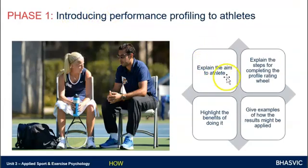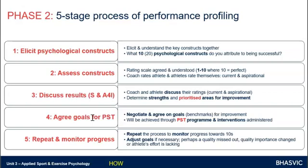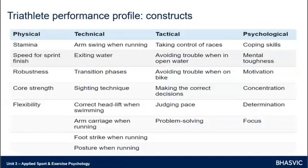Basically there are two phases. The first phase is to introduce — explain the aim, process, benefits, and results. The second phase is the five-stage process: elicit the constructs — what do you want to judge? Judge them — give a rating 1 to 10, you and them. Discuss what you got — what are their strengths, what do they need to work on, and prioritise those. Agree the goals to move them forward for those areas to improve. And agree a time later when they would repeat this process and check the improvements they've made.